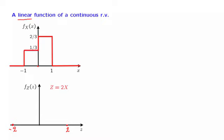Values of x between minus 1 and 0 correspond to values of z between minus 2 and 0. The different values of x in this range are, in some sense, equally likely because we have a constant PDF, and that argues that the corresponding values of z should also be equally likely. So the PDF should be constant over this range. By a similar argument, the PDF of z should also be constant over the range from 0 to 2, and the PDF must be 0 outside this range, because these are values of z that are impossible.